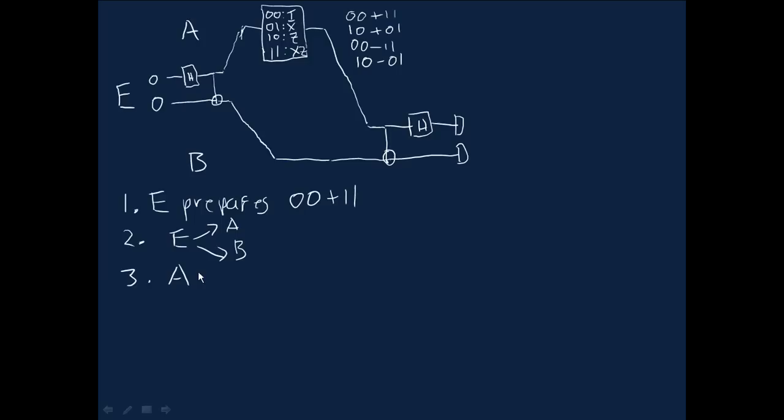The third step is that Alice applies, in many ways, this is really the most complicated part of the protocol. She applies an I, X, Z, or XZ gate, depending on which of the four possible values for her two bits she wants to communicate to Bob.